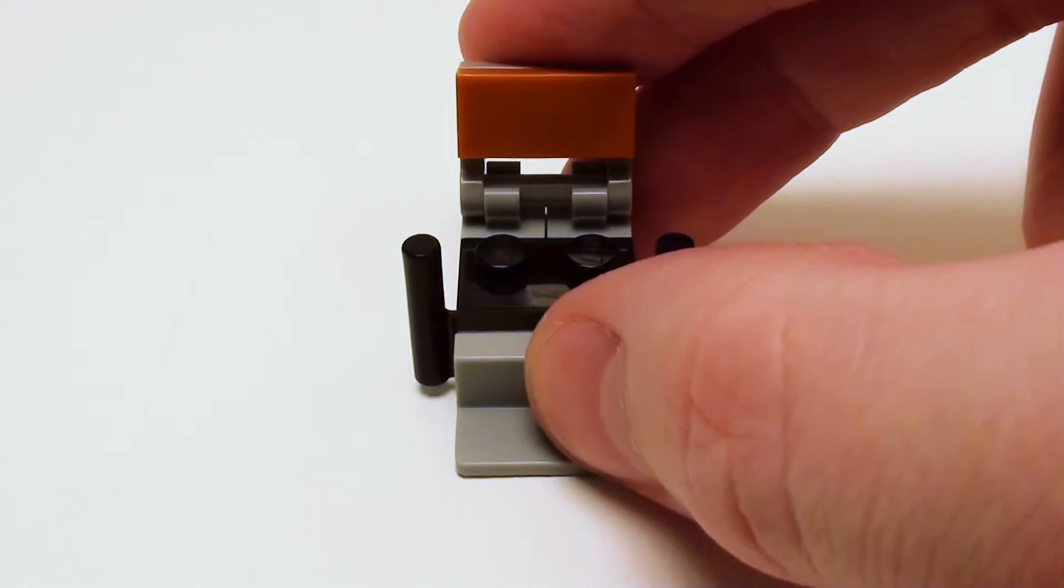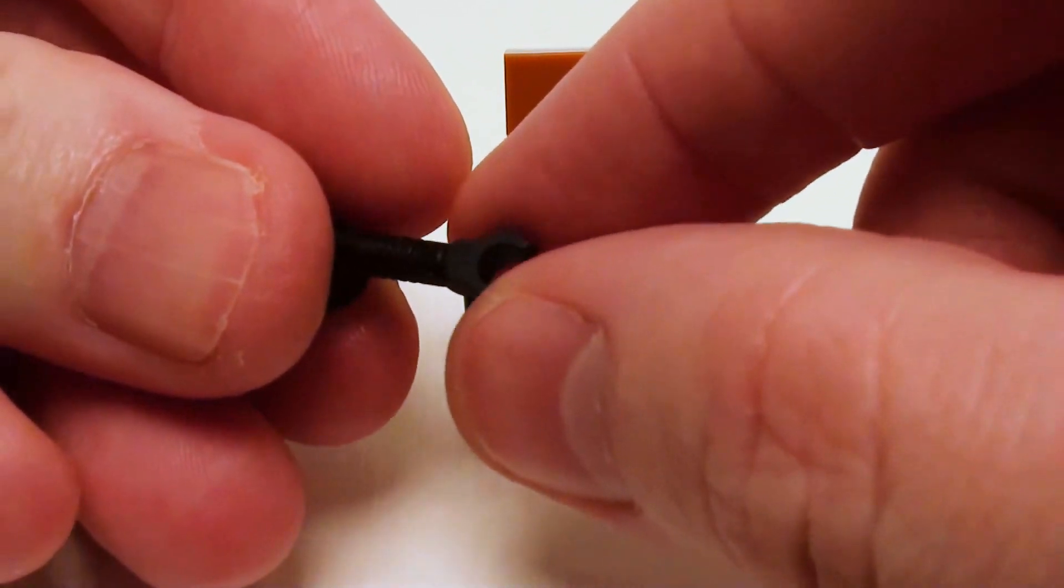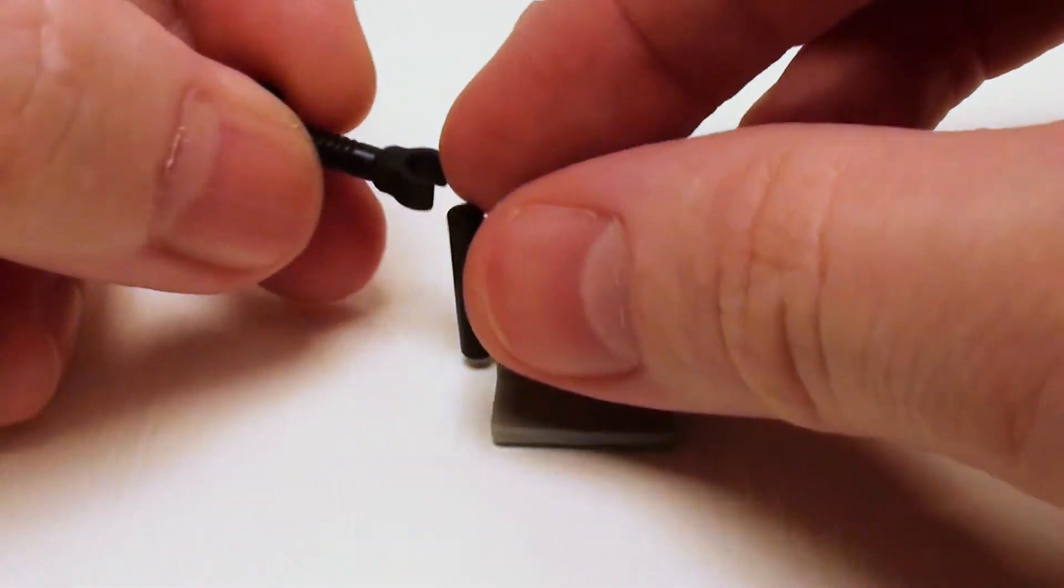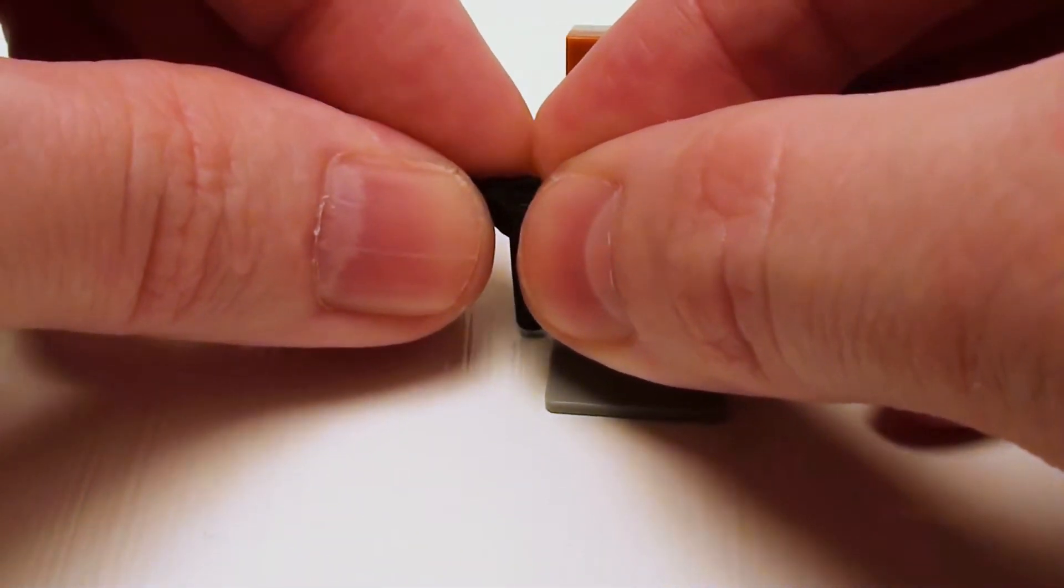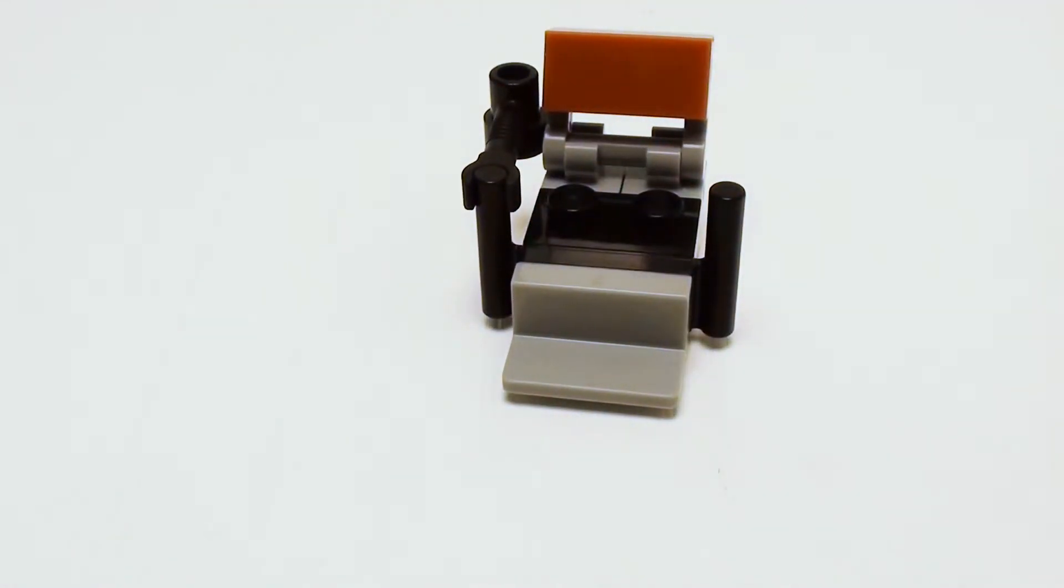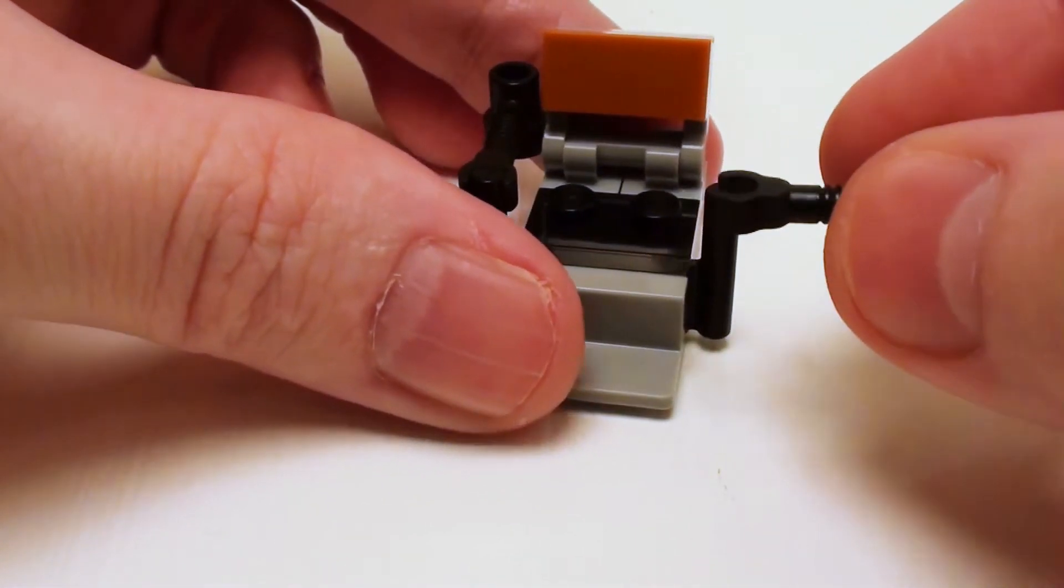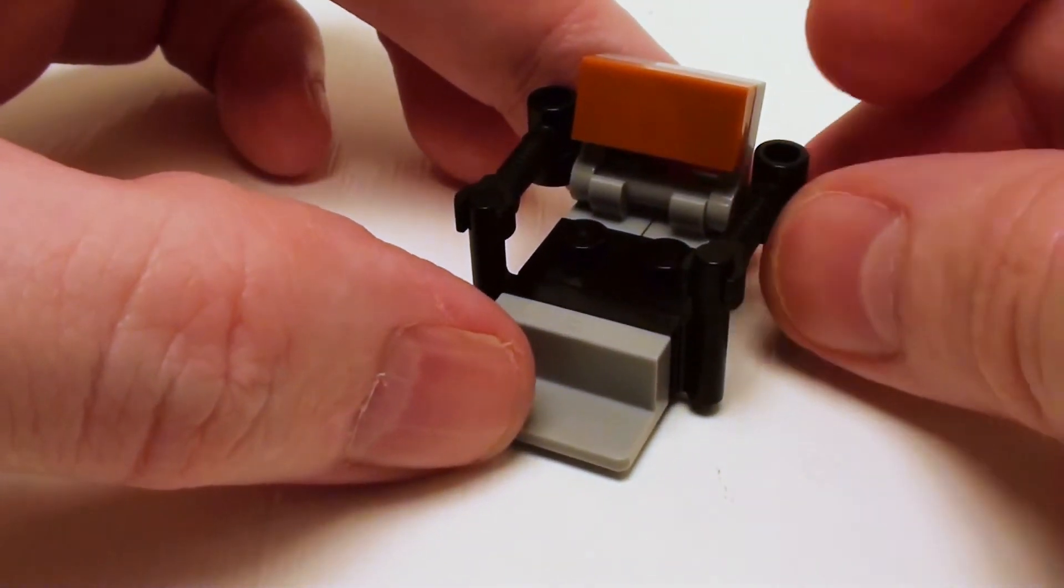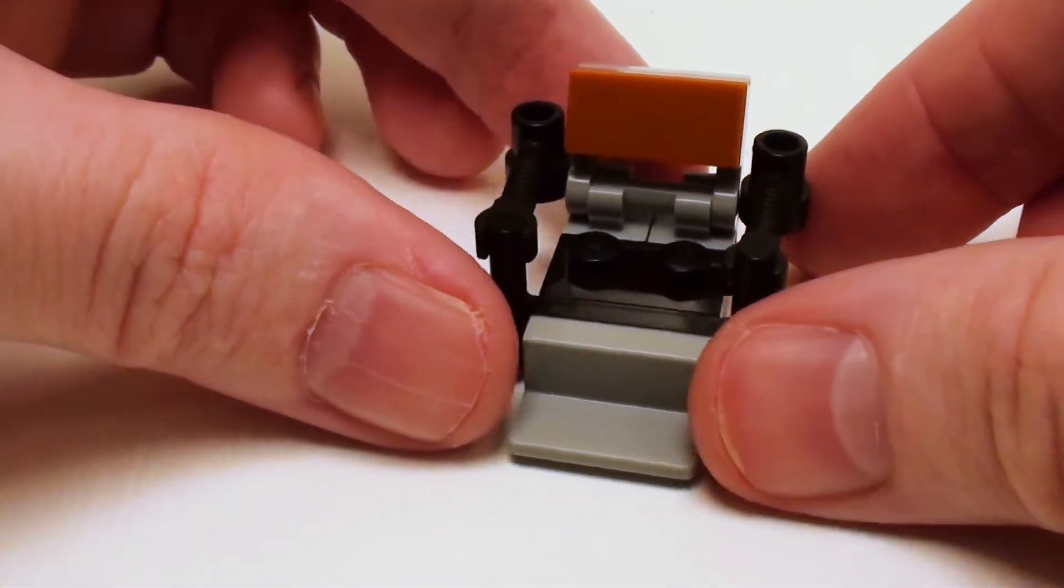Now for arms, I'm going to take one of these modified robot arms. I'm not sure what these are called. We're just going to stick these on the modified 1 by 2 plate. This is going to act as arms. It's a bit crude, but it does work very well.